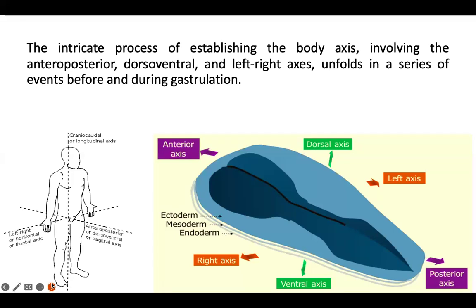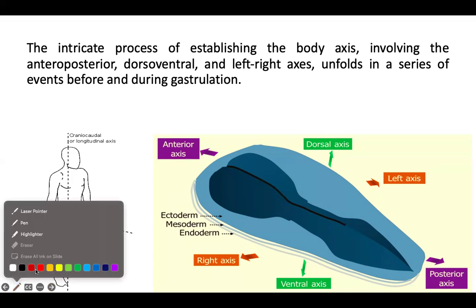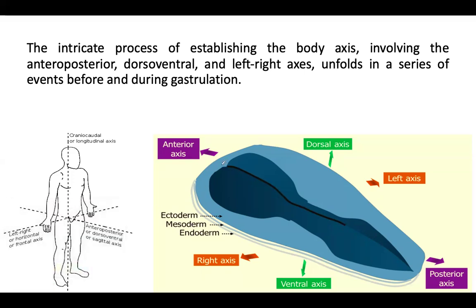These three axes are shown here: antero-posterior, then dorsal-ventral — this is dorsal and this is ventral. The front portion of the body is ventral and the back portion is dorsal.